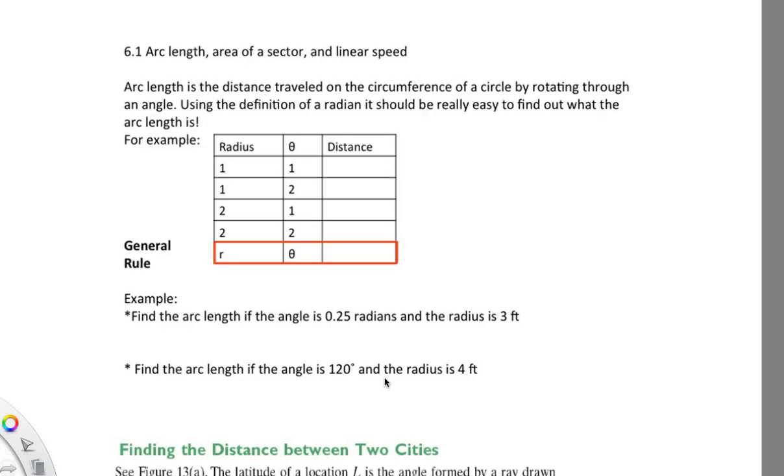6.1: arc length, area of a sector, and linear speed. Arc length is defined as the distance traveled on the circumference of a circle by rotating through an angle. If you use the definition of a radian, it should be really easy to find out what the arc length is, and this is one of the reasons why we have radians.